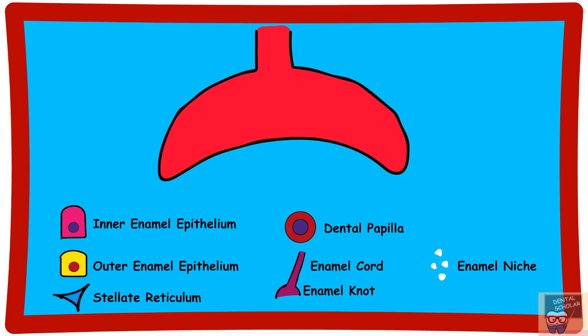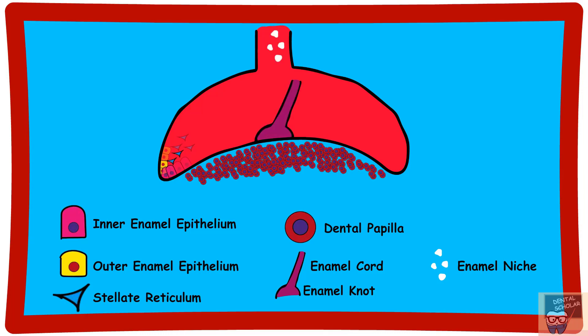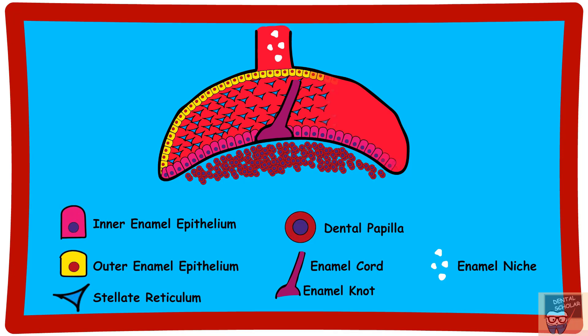The cap stage also shows the beginning of histodifferentiation as different cells — outer enamel epithelium, inner enamel epithelium, and stellate reticulum — appear. Certain temporary structures like enamel knot, enamel cord, and enamel niche can also be appreciated in the cap stage.